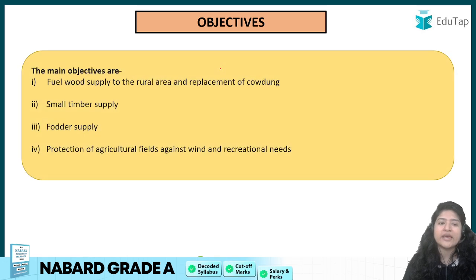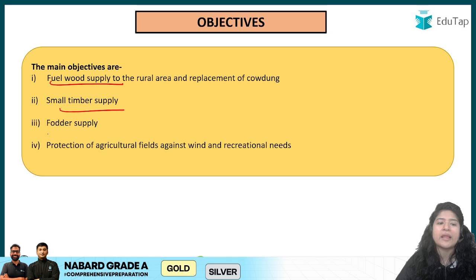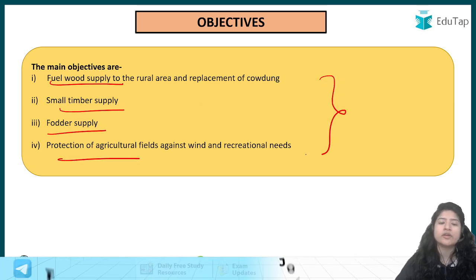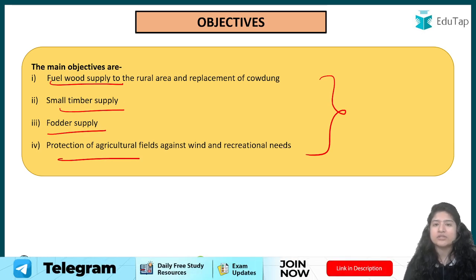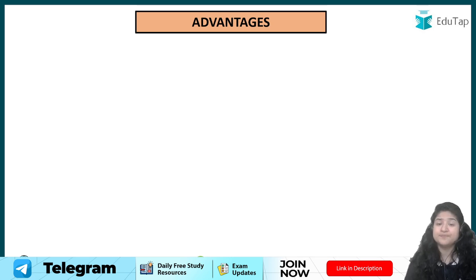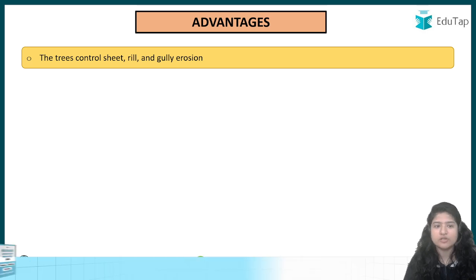The objectives of social forestry are definitely to reduce the burden on the natural forest. We are talking about fuel wood supply, timber supply, fodder supply — whatever the farmer was dependent on the natural forest for. That is the primary objective: to reduce the burden on the natural forest.